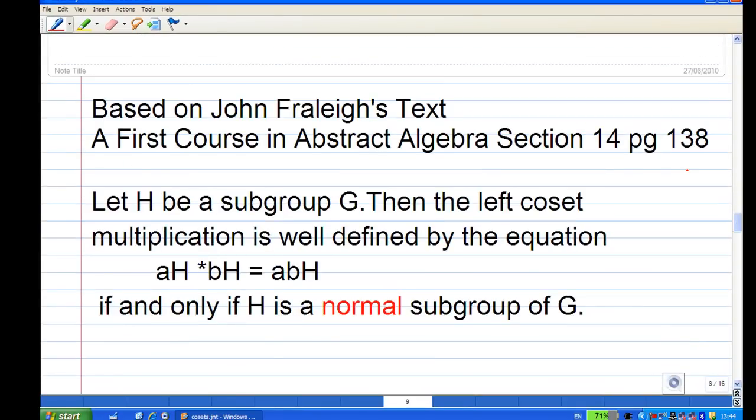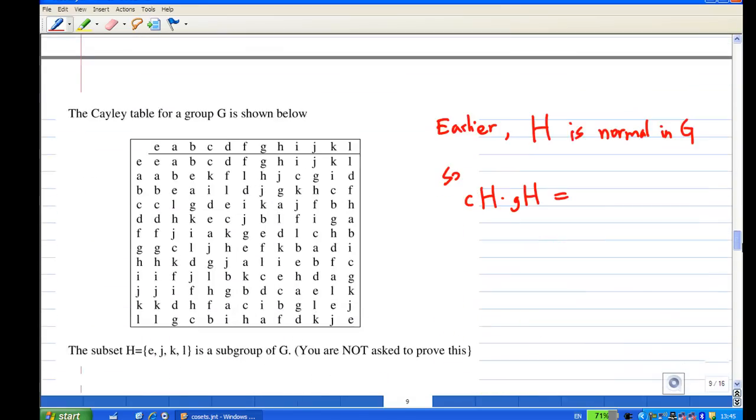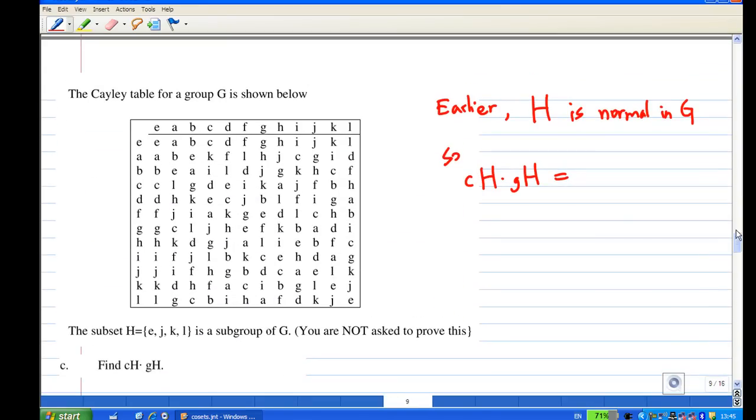According to John Fraleigh's text A First Course in Abstract Algebra, Section 14, page 138: Let H be a subgroup of G. Then the left coset multiplication is well-defined by the equation aH times bH equals abH if and only if H is a normal subgroup of G.